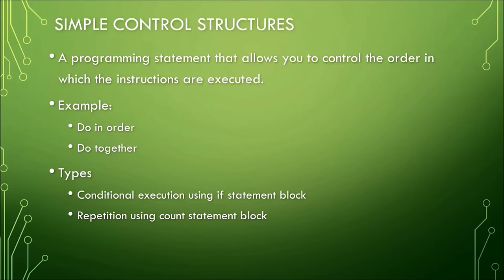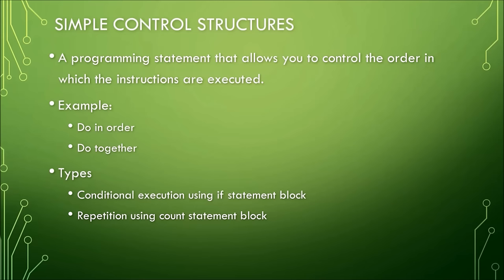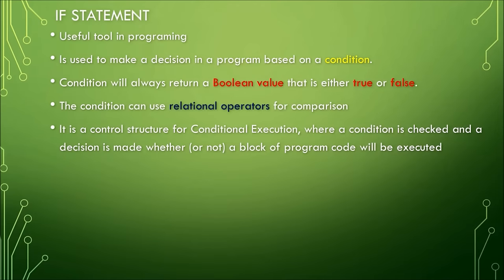Do in order controls the program by executing instructions in sequence, one after the other. Do together controls the program by making actions happen at the same time. The two control structures we will be using in class are: conditional execution using the if statement block, and repetition using the count statement block. Repetition will be covered in the next chapter; right now we focus on the if statement block.